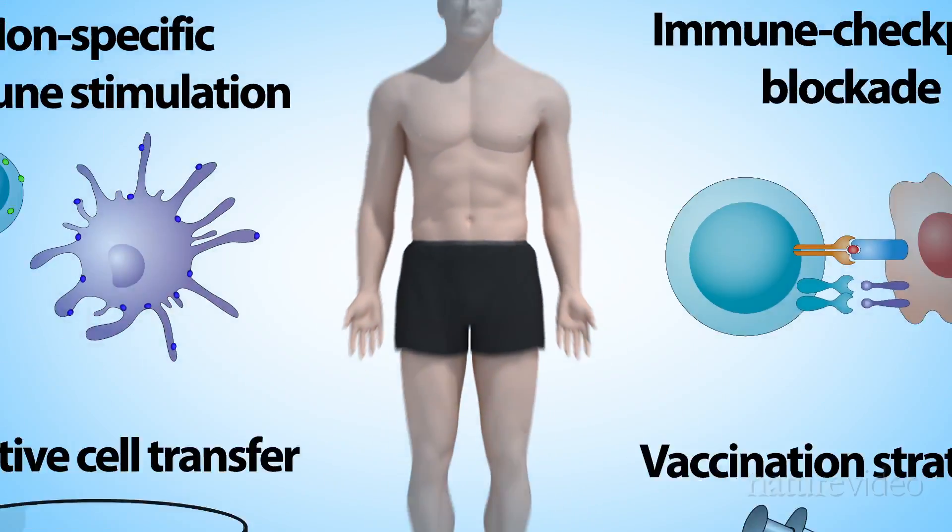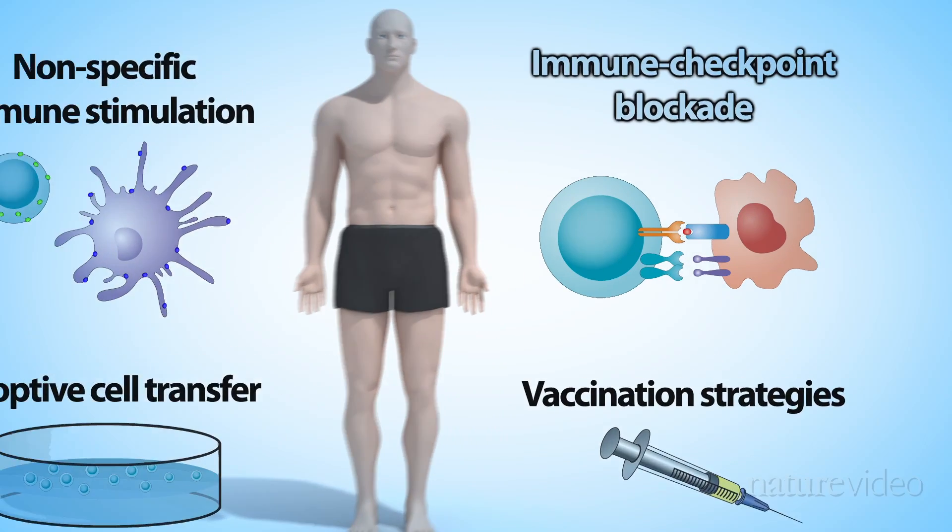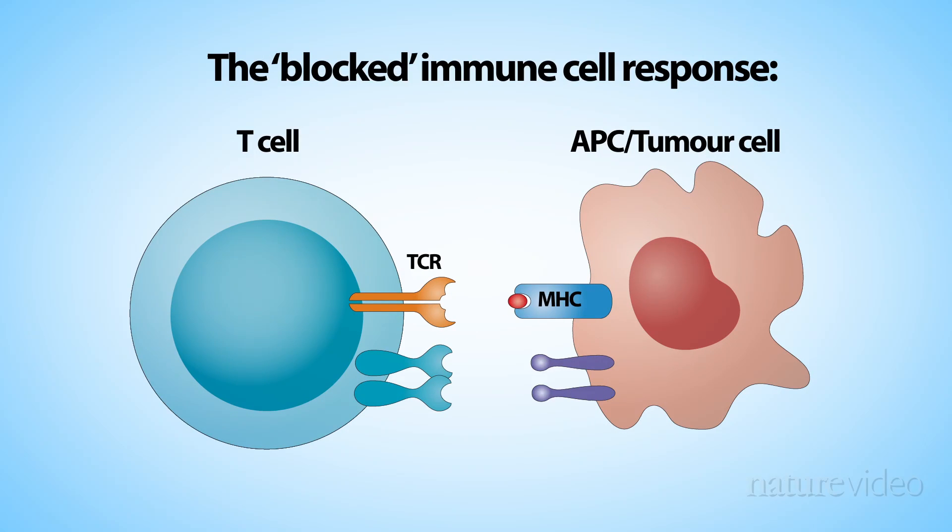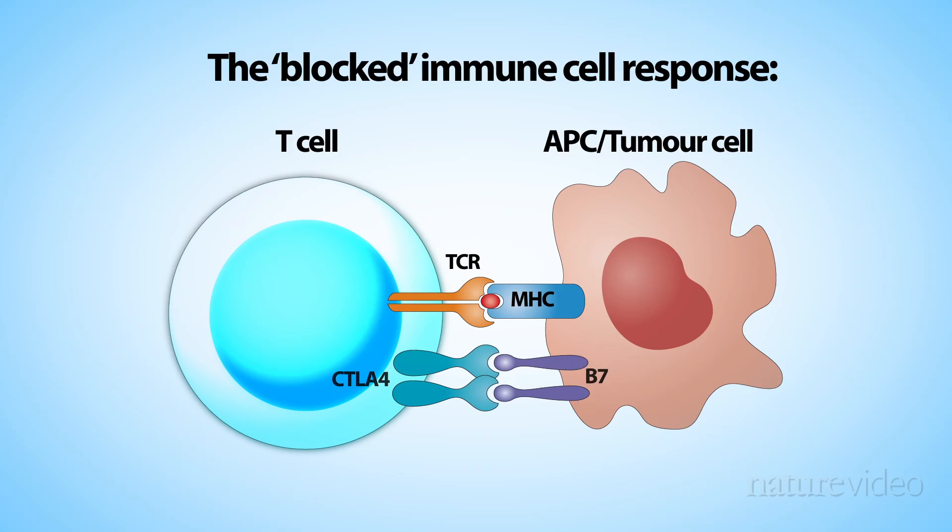Non-specific immunity can also be achieved by removing so-called immune checkpoint blockades. These blockades normally dampen down the immune response to prevent collateral damage to healthy tissue. But to fight cancer, scientists need to remove some of these blockades to make the immune response stronger.